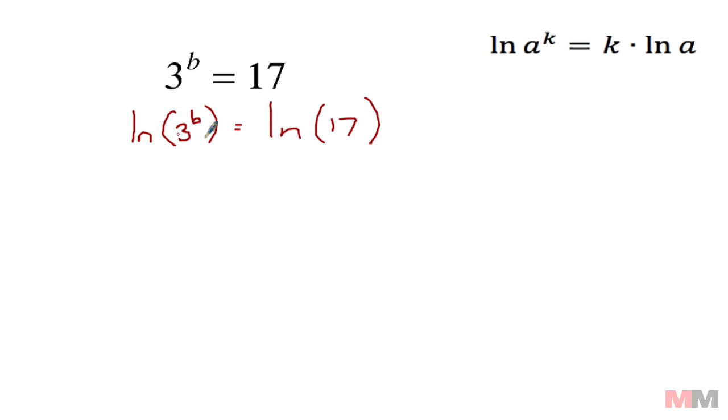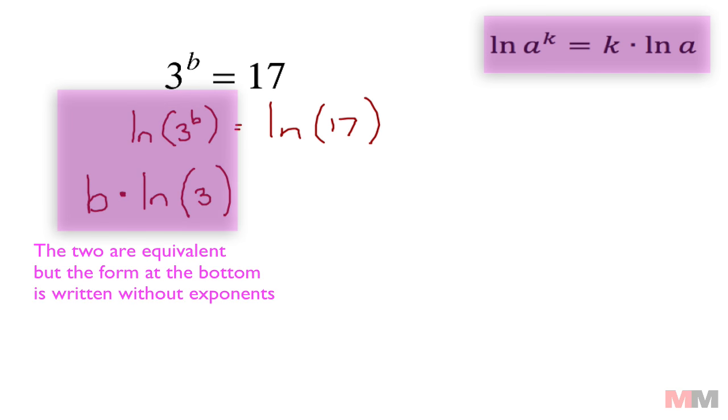This part right here on the left side we can rewrite by looking at this property. This property is telling us that we can get rid of this exponent and then put it in the front, so we can rewrite this as b times the natural log of 3. These two are equivalent by looking at this property. Why that is useful is that you don't have to deal with exponents anymore, everything's on the ground.